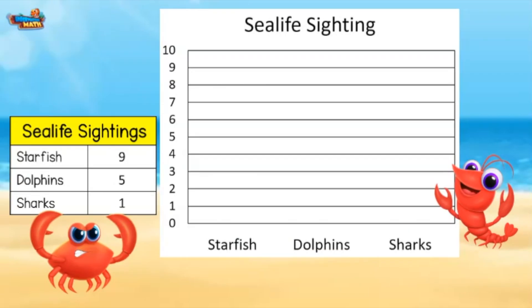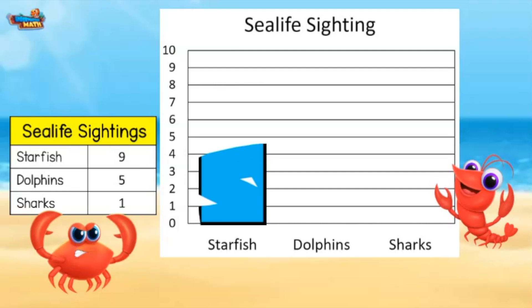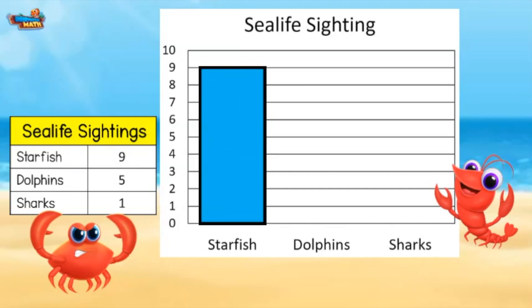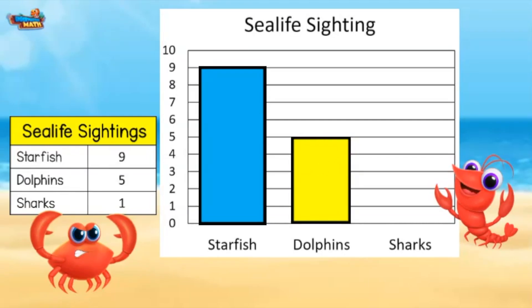On this bar graph, we are going to chart the sea life sightings on our beach watch today. We saw 9 starfish, so we make a bar above the starfish that reaches all the way to the 9. We saw 5 dolphins, and the bar above the dolphin will line up with the 5.